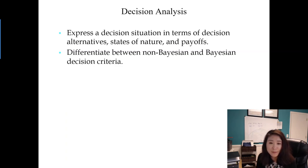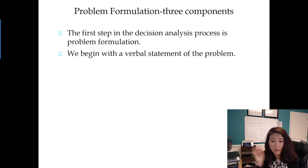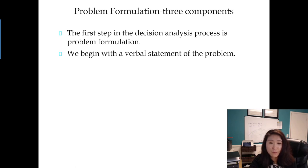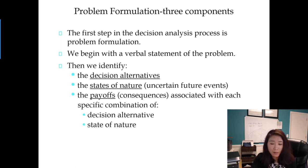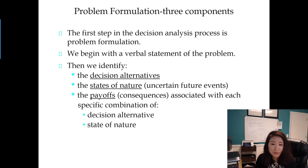In this first video we're going to look at how we describe the decision situation. To do that, we need to learn three important components. The first step in the decision analysis process is problem formulation, which usually starts from a verbal statement of the problem. From that verbal statement you have to identify three components: decision alternatives, states of nature, and payoffs.